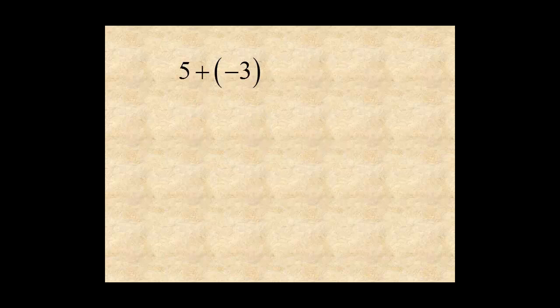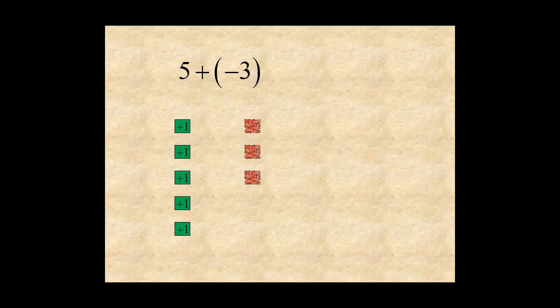For five plus negative three, start with five positive tiles and add three negative tiles.